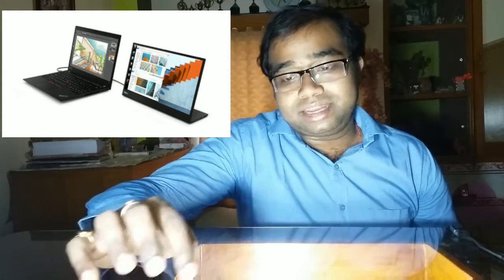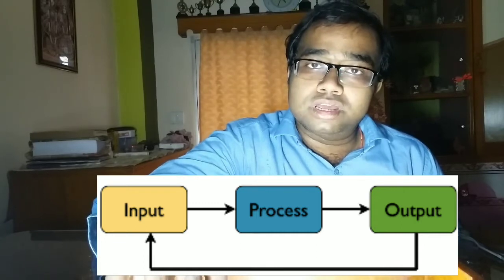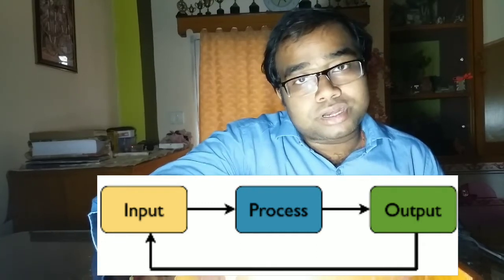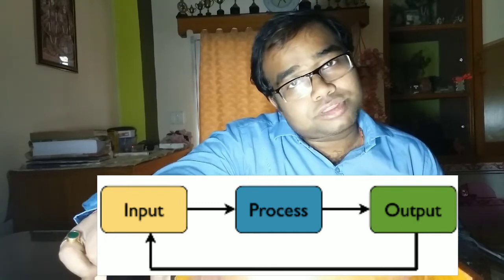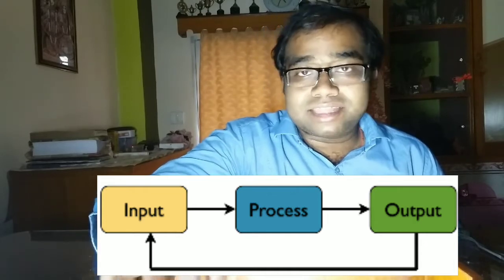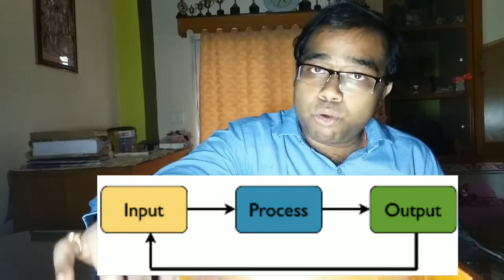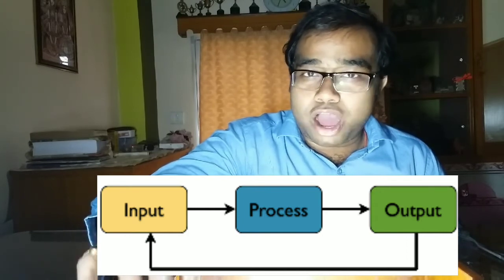The cycle goes on — we give input to the computer, the computer processes it, and then it gives us the output. Again we give input, the computer processes it, and again it gives us output. Like this, the IPO — Input, Process, Output — cycle goes on continuously.